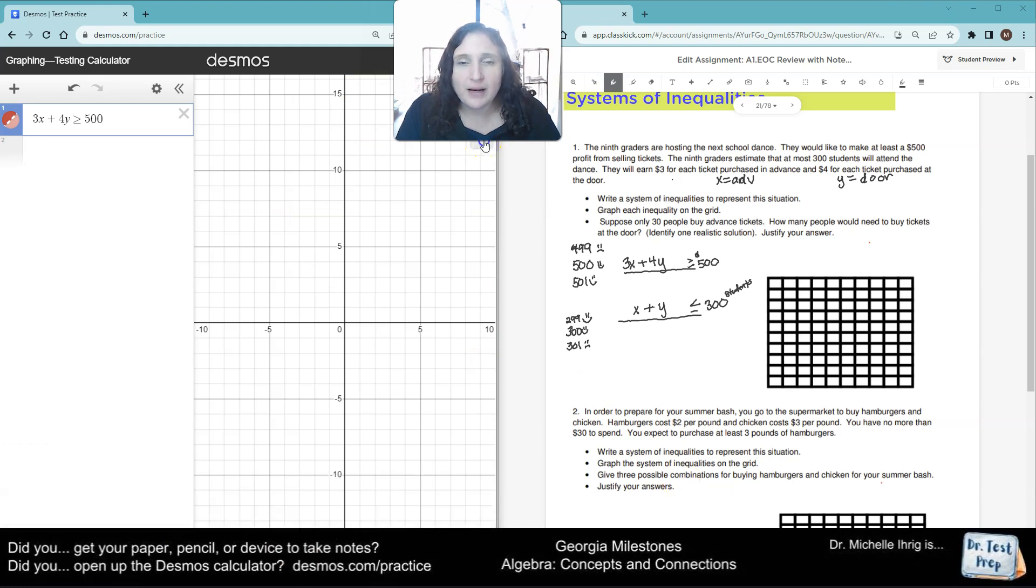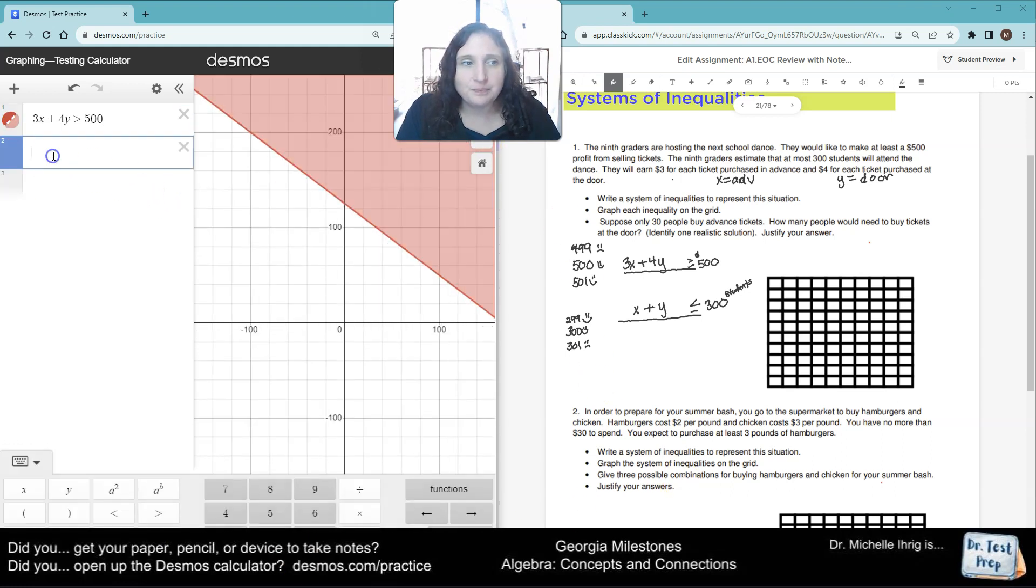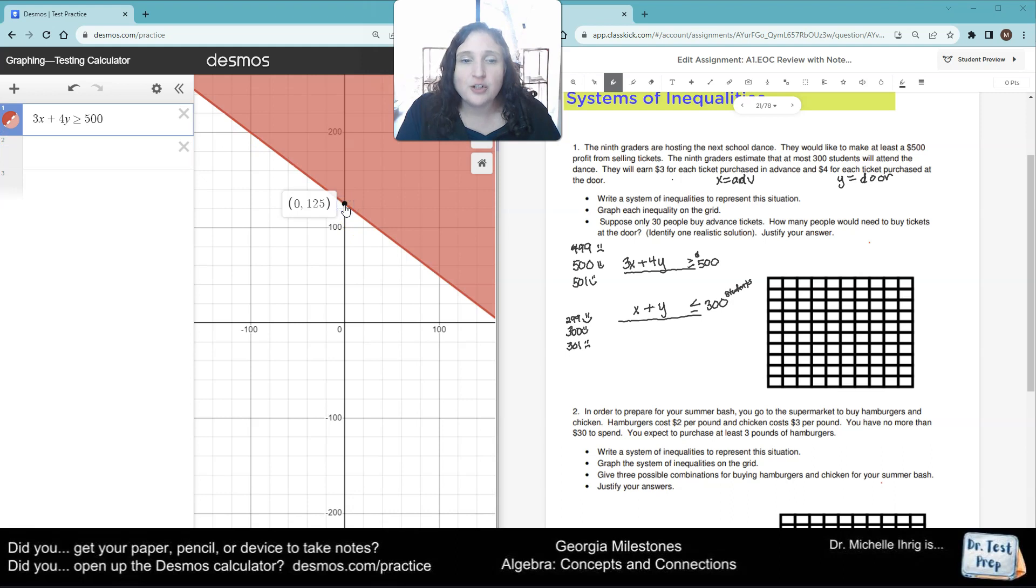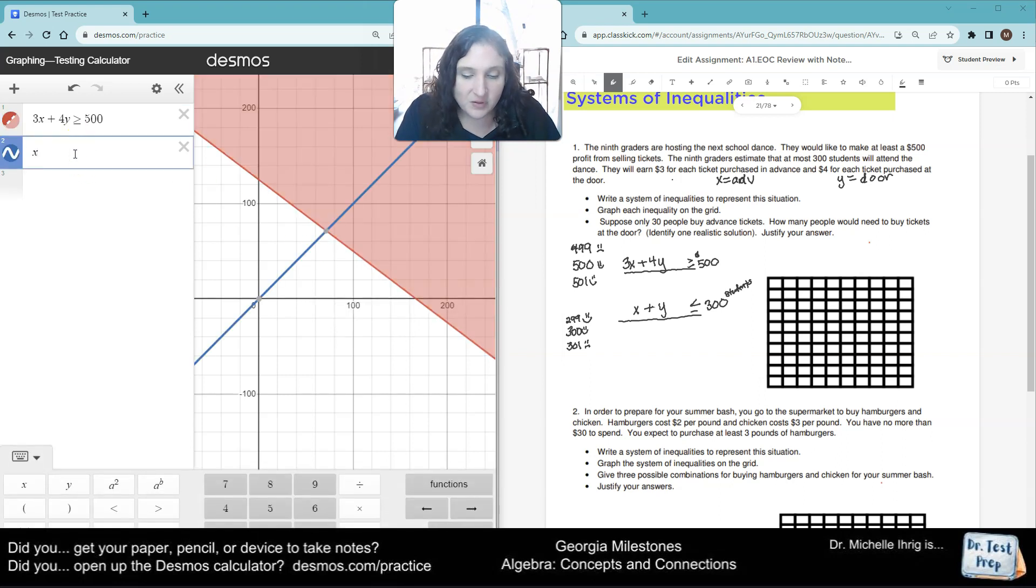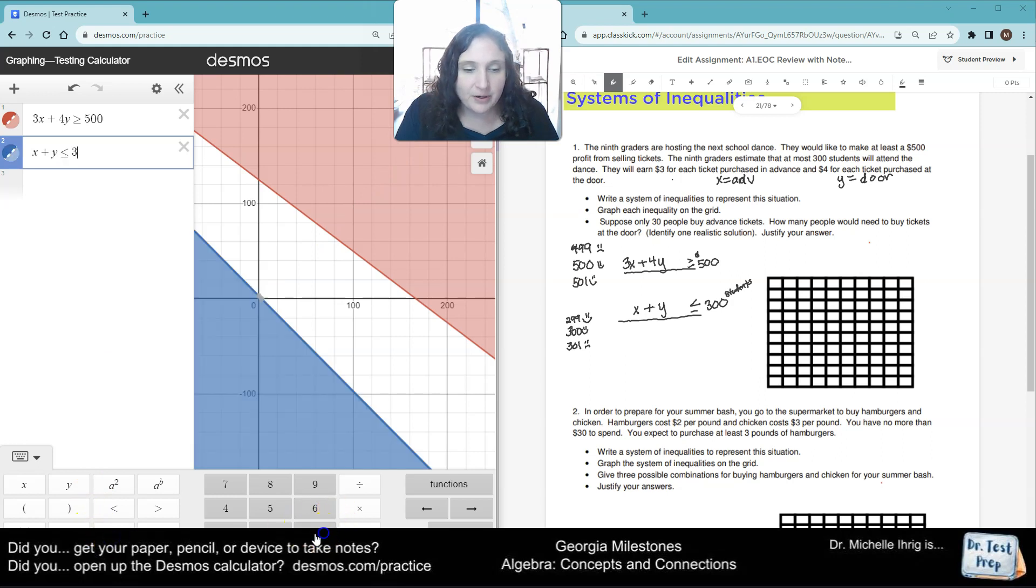So I'm going to zoom out so we see our graph. So we know that the minimum will be 125 Y people, or 166.67. So we need to do 166 because we can't have a partial of a person. Now we're going to type in our X plus Y is less than or equal to 300.